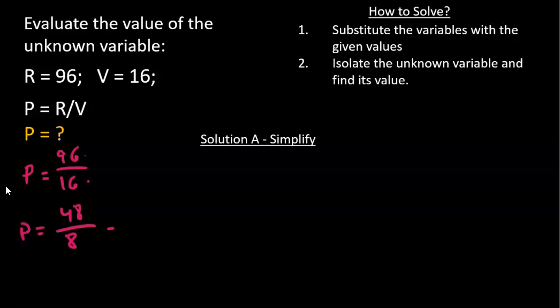We can further simplify by 2. 48 is 24 times 2, and 8 is 4 times 2. And we can continue. 24 is 12 times 2, and 4 is 2 times 2. And now it's much easier to say 12 divided by 2 is 6. P equals 6.